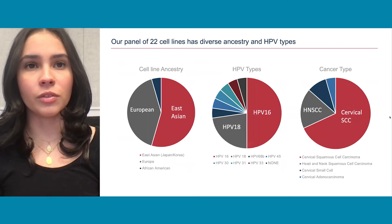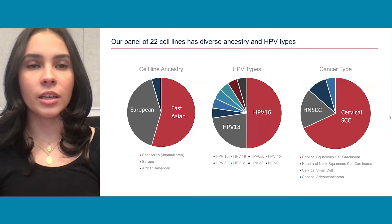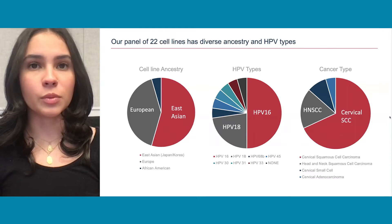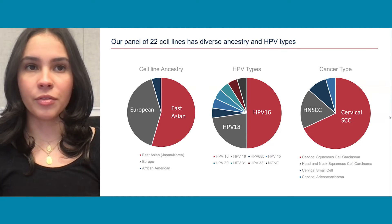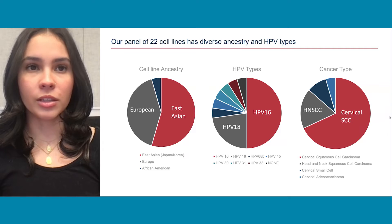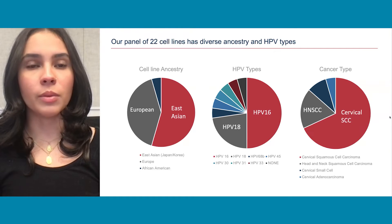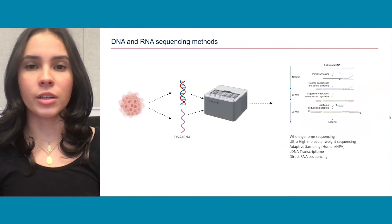Our panel of 22 different cell lines had different information on ancestry, HPV type, and cancer type. Looking at cell ancestry, we had 59% East Asian, 36% European, and 4% African American. There were eight different HPV types, with HPV-16 seen in half of them. In the collection, there are four different cervical cancer types, with cervical squamous cell carcinoma being present in over 50% of our cell lines.